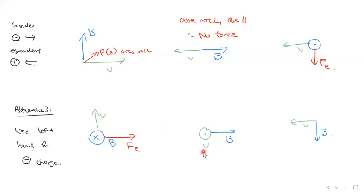Velocity is pointing out of the page, magnetic field is pointing to the right, so your force on the electron is pointing down. Your velocity is heading to the left, your magnetic field is pointing down. That means you're getting a force into the page.